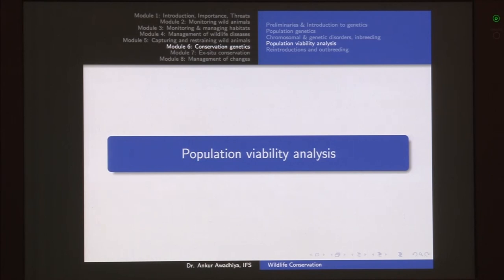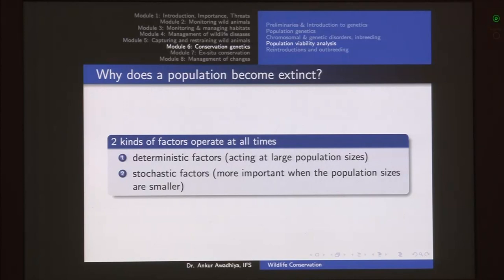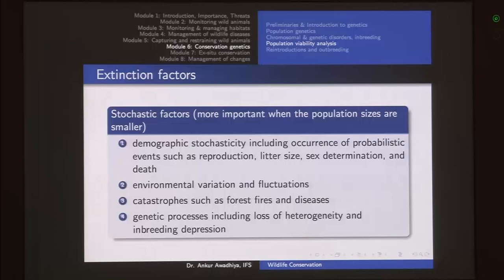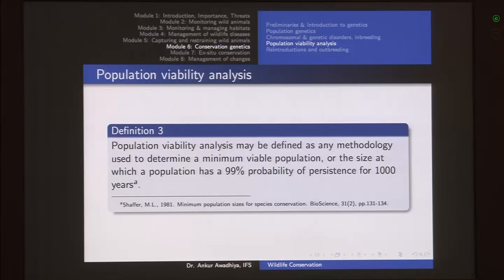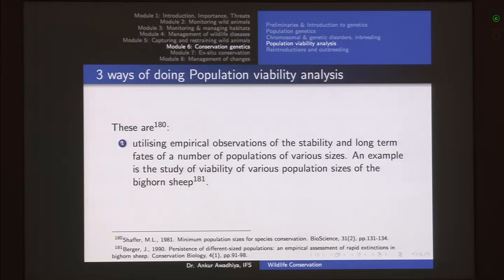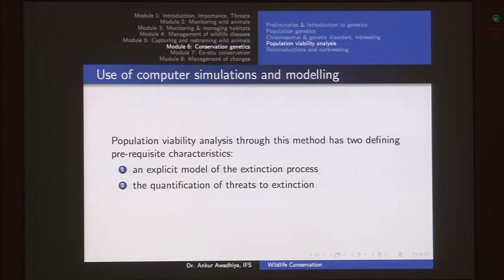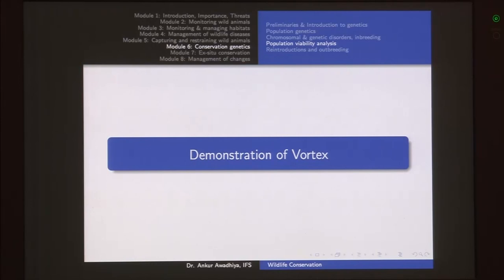Next we had a look at population viability analysis. Population viability is the ability of a population to persist or avoid extinction. Two kinds of factors are involved: deterministic and stochastic. Population viability analysis uses any methodology to determine a minimum viable population — the size at which the population has a 99% probability of persistence for 1000 years. There are three approaches: field data or empirical observations, mathematical models, and computer simulations. Computer simulations also require a mathematical model in the background and quantification of threats to extinction. Software called Vortex, and another version called Eddy, can be used for population viability analysis.